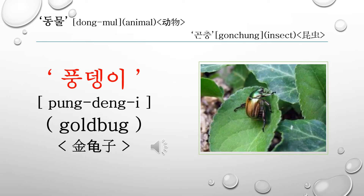This word is 풍뎅이. 풍뎅이 is called a gold bug in English, and it is called 金龜子 in Chinese. Let's read it again: 풍뎅이, 풍뎅이.